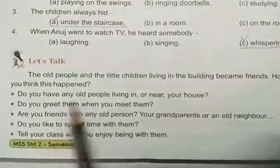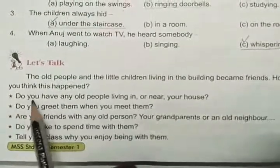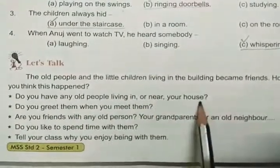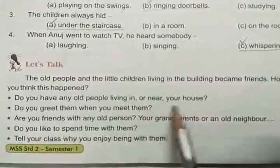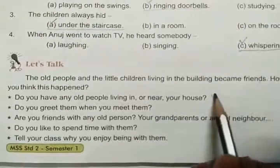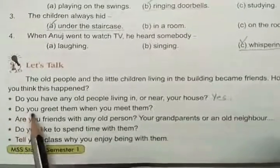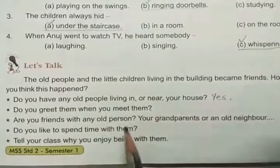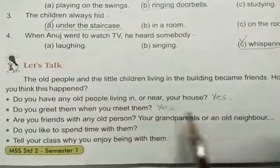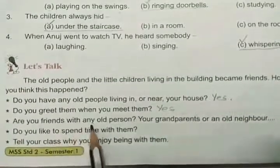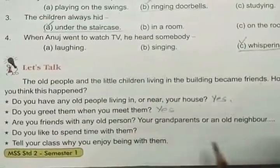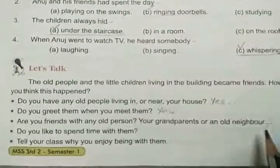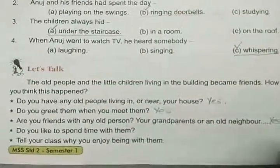They have given some questions here. First: Do you have any old people living in or near your house? Yes. Second: Do you greet them when you meet them? Greeting means wishing. Yes, very good, because you are good children. Third: Are you friends with any old person — for example, your grandparents or an old neighbor? Yes, if you have some, you should write yes.